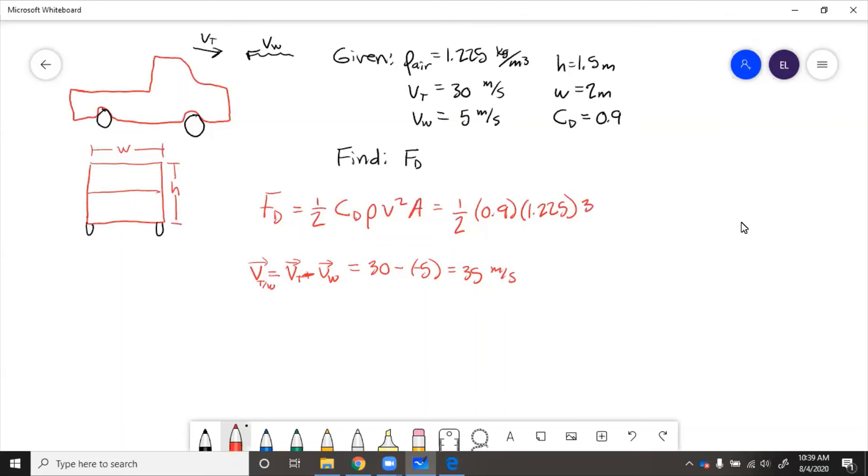That's the relative velocity, so we'll put that 35 in right here. Then the area is h times w. So that is 1.5 times 2 which equals 3.